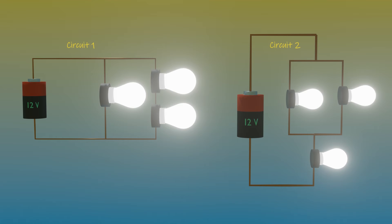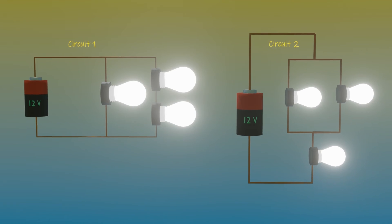The correct answer is circuit one. Circuit one has less resistance than circuit two and put out more light.